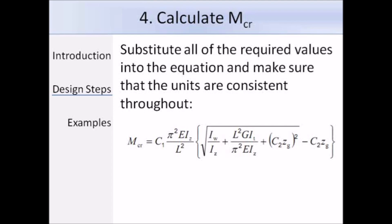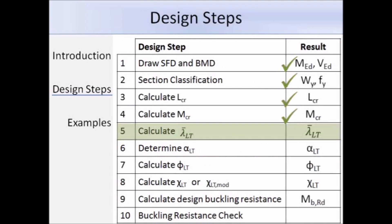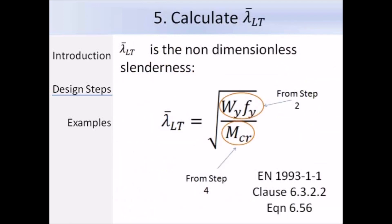That's step 4 completed, and now we can work out the value of lambda bar LT. Lambda bar LT is the non-dimensional slenderness, given by expression 6.56 in clause 6.3.2.2 of the Eurocode. This expression states that lambda bar LT equals the square root of W_Y times F_Y divided by M_CR, where W_Y times F_Y is the cross-sectional capacity and M_CR is the critical moment we just covered. It is simply a matter of substituting in those values.